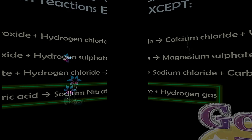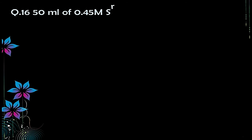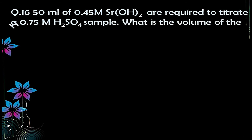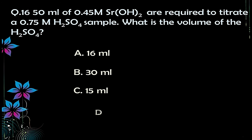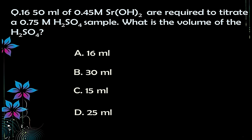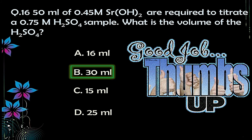Question number sixteen: 50 ml of 0.45 M strontium hydroxide Sr(OH)₂ are required to titrate a 0.75 M sulfuric acid H₂SO₄ sample. What is the volume of H₂SO₄? Options: A) 16 ml, B) 30 ml, C) 15 ml, D) 25 ml. This is a numerical question requiring calculation. The correct answer is option B — 30 ml.